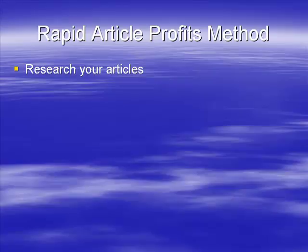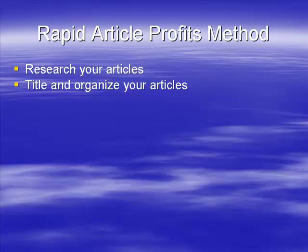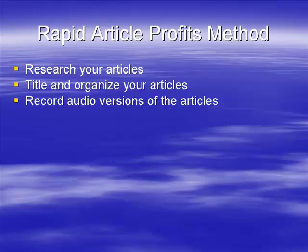Then you need to title and organize your articles. What we do is write articles in batches of 10, give them a number 0 to 9, and put the title down. Once you've done that, write three to five points on each article. Three points will get you about 300 words, five points typically about 500. I personally aim for 500, but it's up to you.